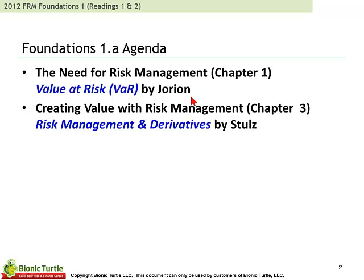The first is Chapter 1 from Jorian's book called 'Need for Risk Management.' That's not the handbook — the handbook is a very useful introduction, but it's not formally assigned in the FRM; it's a supplement. This is Value at Risk, 3rd Edition by Jorian, the textbook.